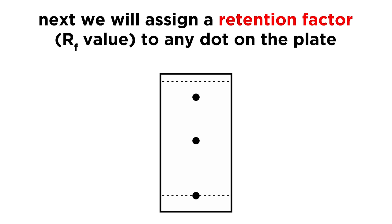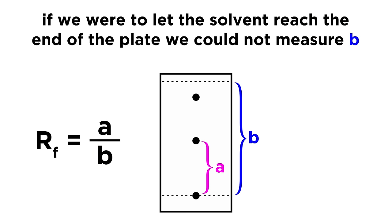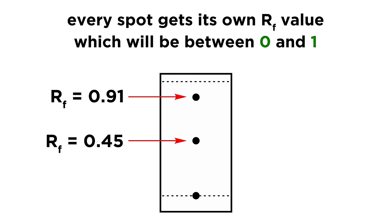Now we can assign a retention factor, or RF value, to any dot on the plate. This represents the distance traveled by a particular substance as a fraction of the distance traveled by the solvent front. To get this, we just measure the distance from the line where spotting took place to the center of the dot, and divide that by the distance from that same line to the line at the top where the solvent front ended up. This is why we do not let the solvent reach the end of the plate, otherwise we could not get this second value, and we could not calculate RF values. We will get some value between zero and one, and we will do this for any spot on the plate.